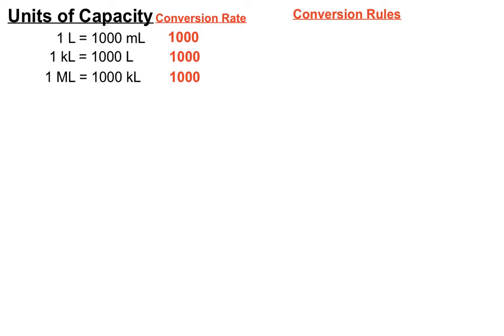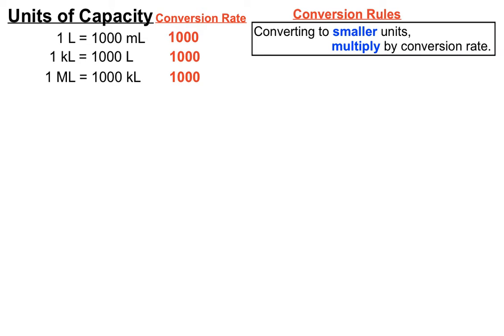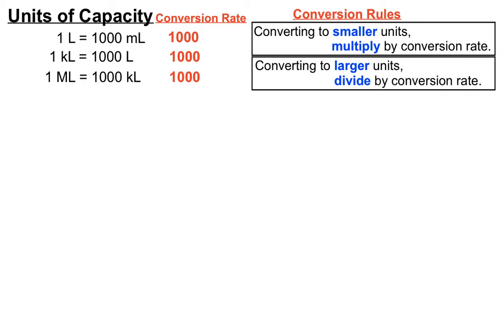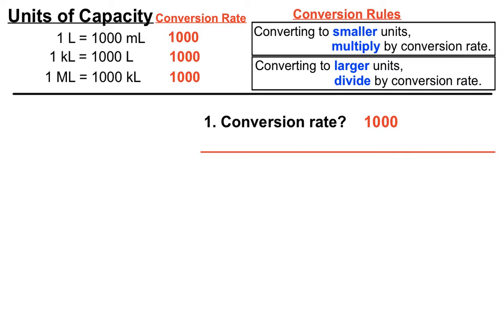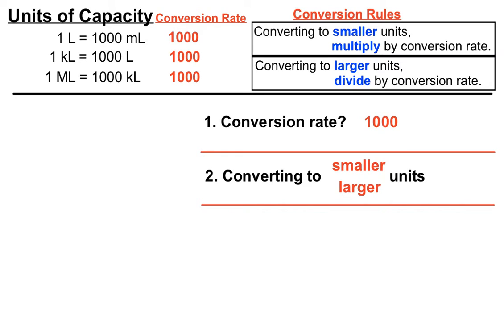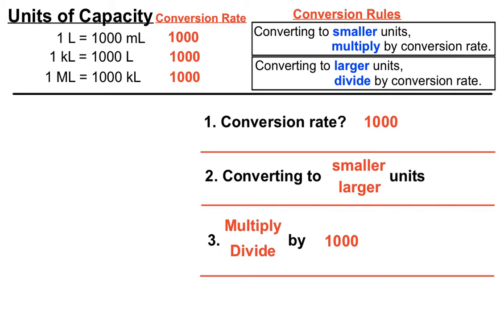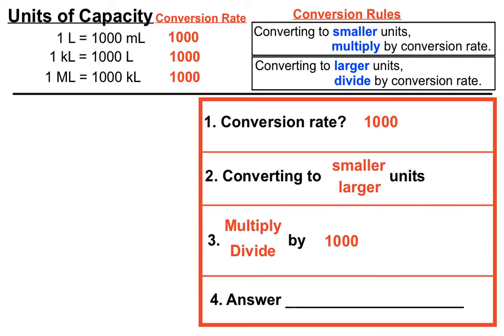The conversion rules, as you'll notice from our other conversions: to convert to smaller units, we multiply by the conversion rate; and to convert to larger units, we divide by the conversion rate. To convert between units of capacity, we check the conversion rate, decide whether we're converting to smaller or larger units, and that determines whether we multiply or divide by that conversion rate of a thousand.